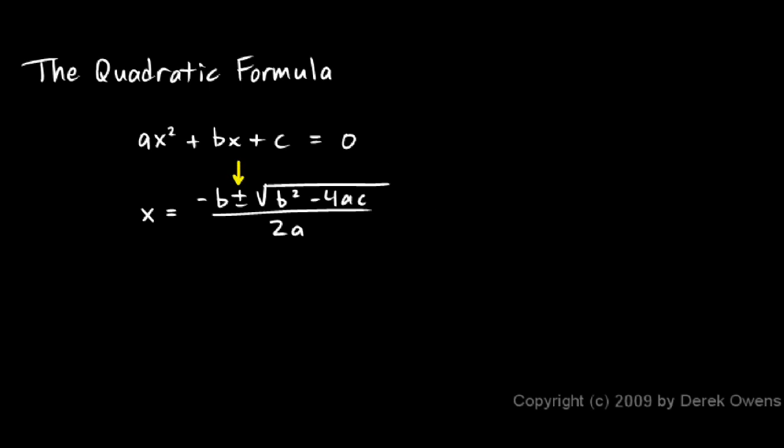You actually get two answers because of the plus or minus right there, and those are the values of x which satisfy the original equation. And now we'll look at some examples of doing exactly that.